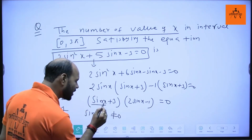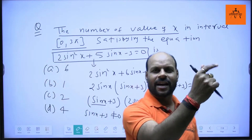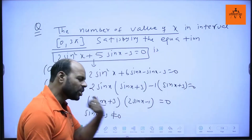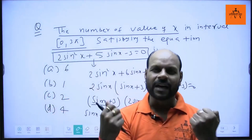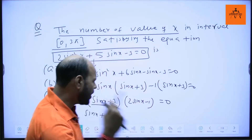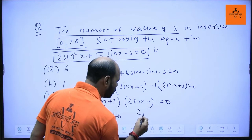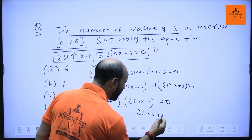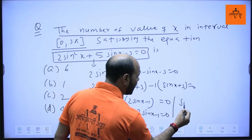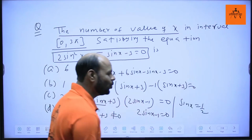(sinx + 3) can never be 0 because the minimum value of sinx is -1, so sinx + 3 = -1 + 3 = 2, never 0. So we get 2sinx - 1 = 0, which gives sinx = 1/2.